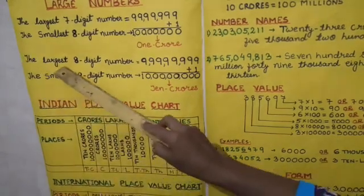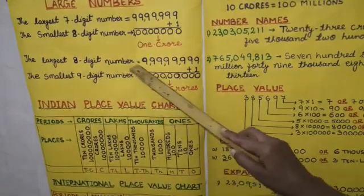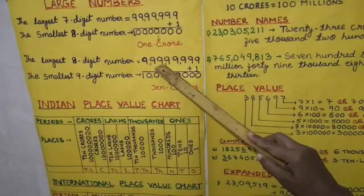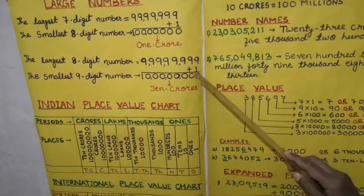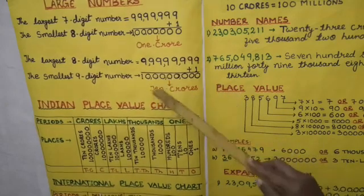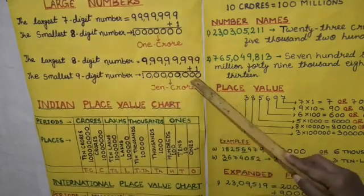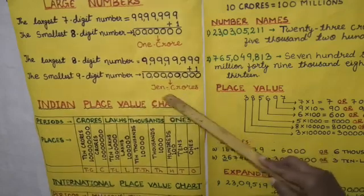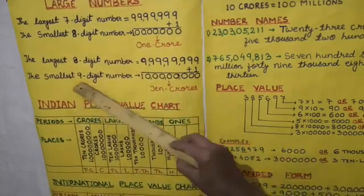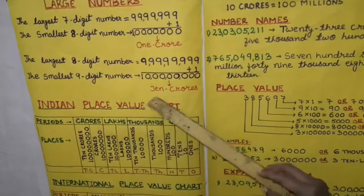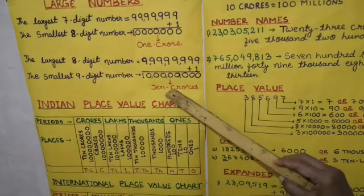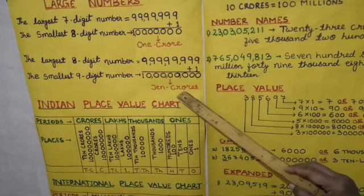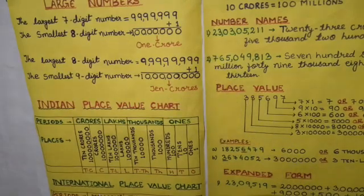Now we take the largest 8-digit number. The largest 8-digit number equals 9 crore 99,99,999. On adding 1 we get 1 followed by eight zeros. This number is read as 10 crores. It means the smallest 9-digit number equals 10 crores, and the ninth place is called the 10 crores place. Thus we may extend the Indian place value chart to 9 places.